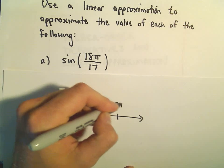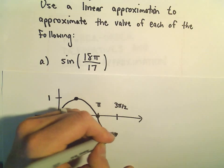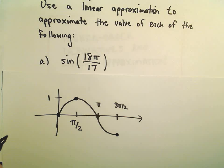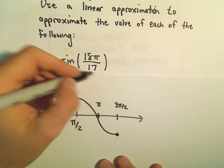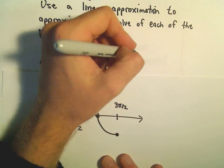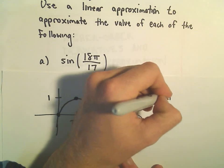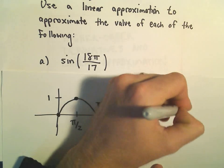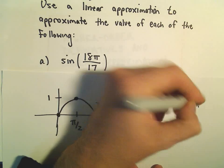Okay, so 18π over 17. That's just a little bit bigger than π. So 18π over 17, that's just going to be 1 and 1 seventeenth π.